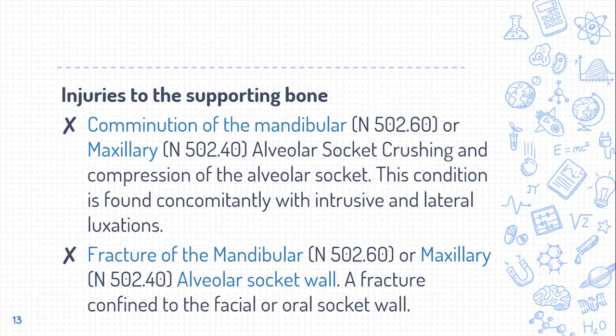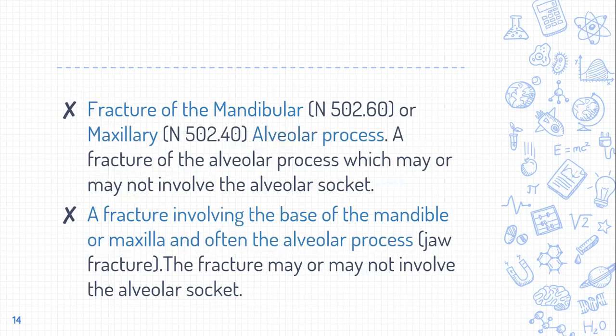The next category is injuries to the supporting bone. One classification is comminution of the mandibular or maxillary alveolar socket — crushing and compression of the alveolar socket — which occurs concomitantly with intrusive and lateral luxation. The second category is fracture of the mandibular or maxillary alveolar socket wall, where the fracture is confined to the facial or oral socket wall.